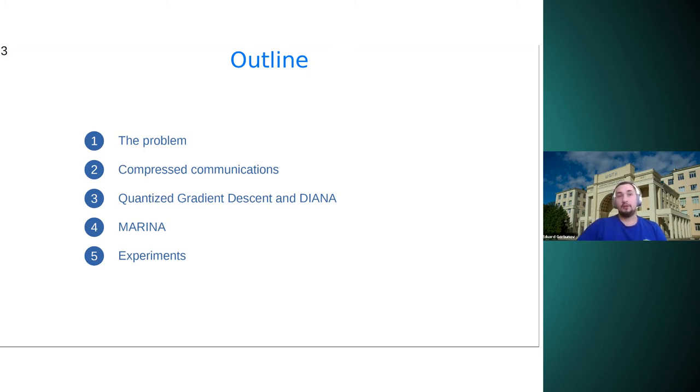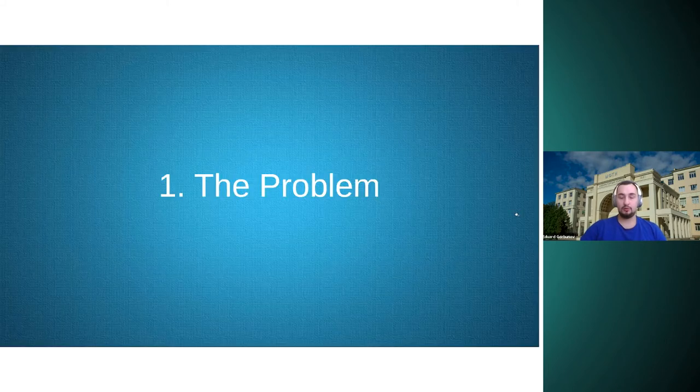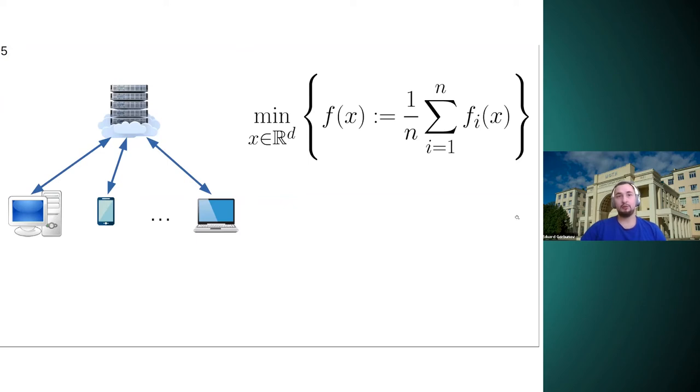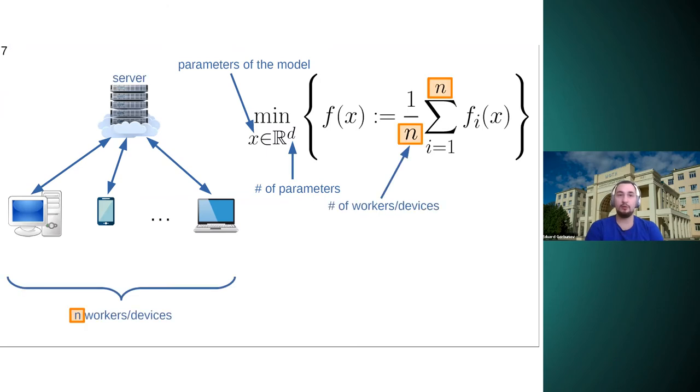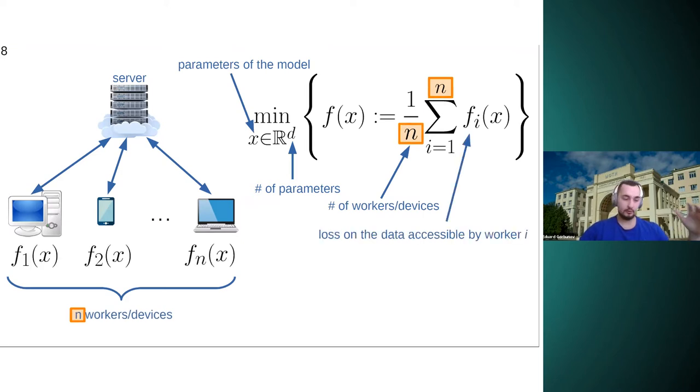So we consider classical distributed centralized optimization problem here. X is parameters of the model, D is number of parameters. And the goal is to minimize an average of N functions, F of X. And each function is stored on some device, client or peer, and they are connected in a centralized way with a trusted server. So, for example, local loss functions FI can represent some loss on some model or on the part of the data stored on the IF client.